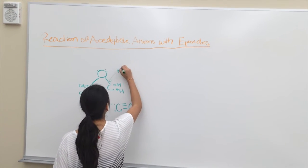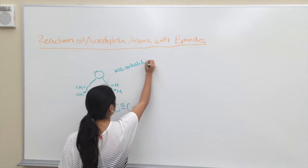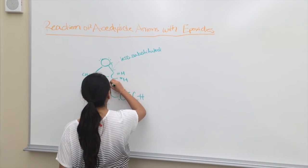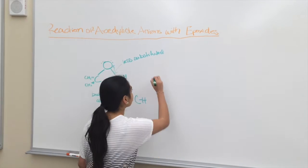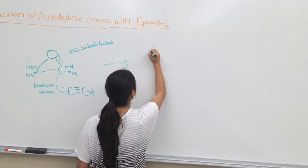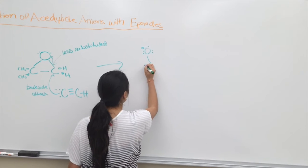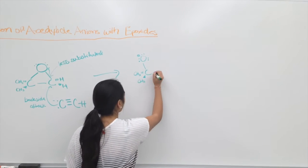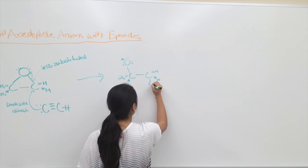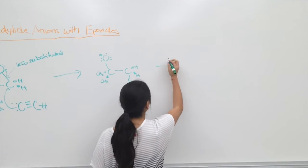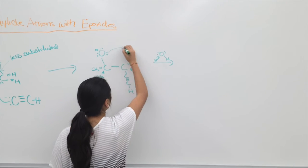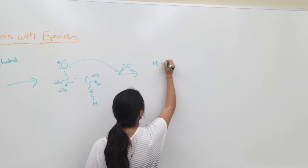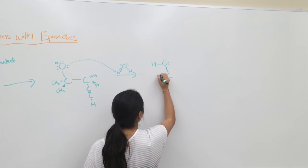In the reaction of acetylide anions with epoxides, the oxygen-carbon bond breaks, leaving oxygen with three lone pairs and a negative charge. And the acetylide anion attacks the less substituted carbon with a backside attack. This now undergoes a reaction with water, and the oxygen on the epoxide is protonated, and the hydrogen-oxygen bond on the water is broken.